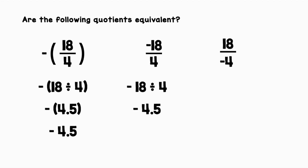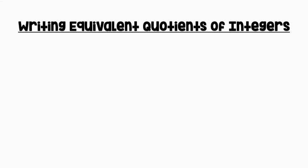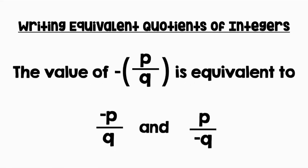Now let's take a look at 18 over negative 4. We can rewrite this as 18 divided by negative 4, which equals negative 4.5. Yes, each expression is equivalent to negative 4.5. Let's generalize: the value of negative (P over Q) is equivalent to negative P over Q and P over negative Q.